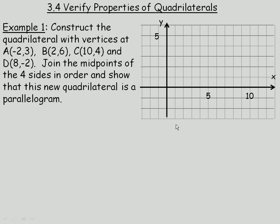This lesson will show a couple of examples of how to verify properties of quadrilaterals. In the first example we are given 4 points to plot. A is the point (-2,3), B is the point (2,6), C is the point (10,4) and D is the point (8,-2).